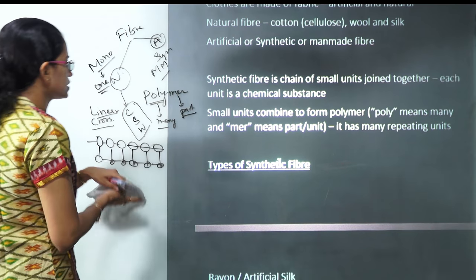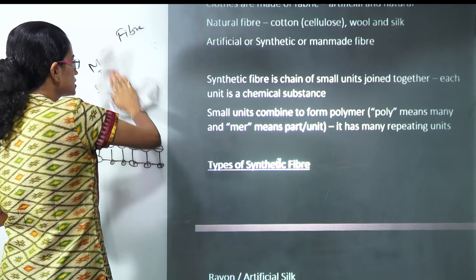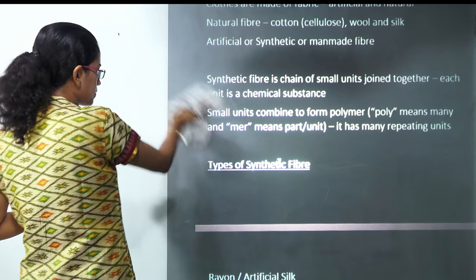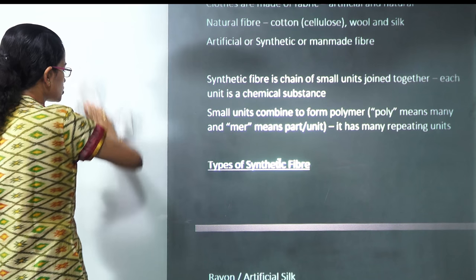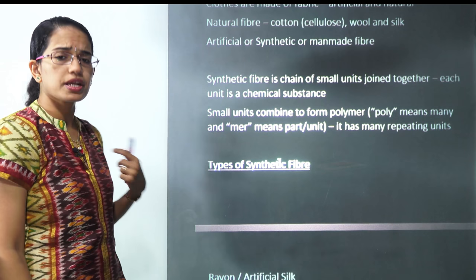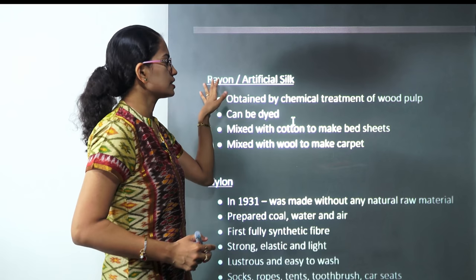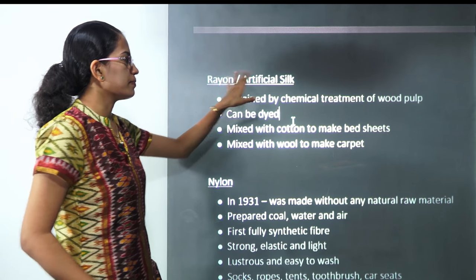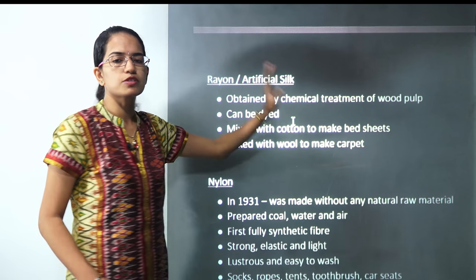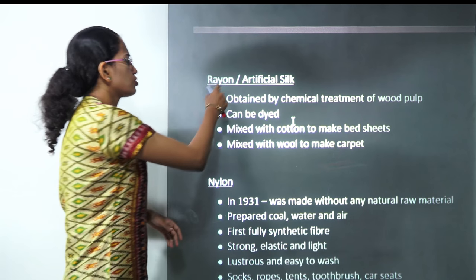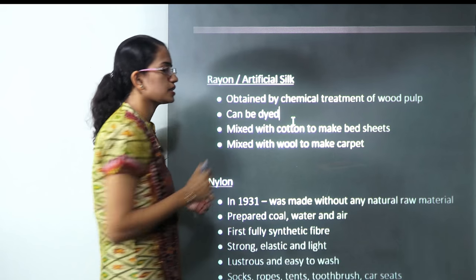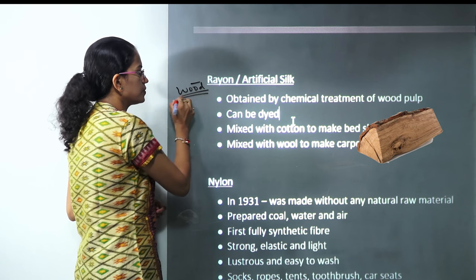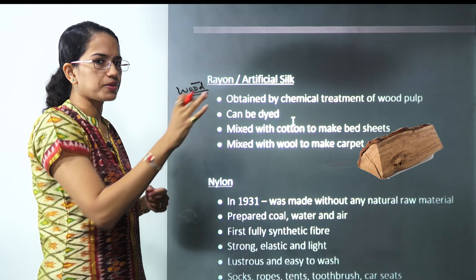Coming on to the types of synthetic fiber, the first fiber we would discuss is rayon. Rayon is obtained from the chemical treatment of wood pulp, so it's not 100% synthetic. This rayon, also known as artificial silk, can be dyed into different colors. It can be mixed with cotton to produce bed sheets, and mixed with wool to produce blankets and carpets. The most important point is it's derived from wood by chemical treatment.